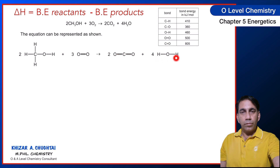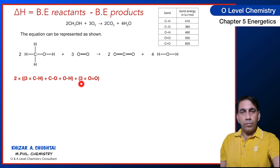In this equation we are using two moles of methanol, three moles of oxygen, two moles of carbon dioxide and four moles of water. Writing this in terms of bonds: for the reactants, two moles multiplied by three C–H bonds plus one C–O bond plus one O–H bond, plus three moles of O=O. For the products: two moles multiplied by two C=O bonds, plus four moles multiplied by two O–H bonds.